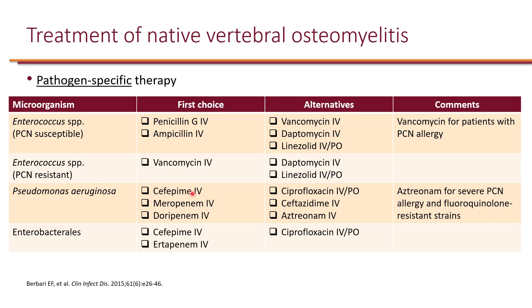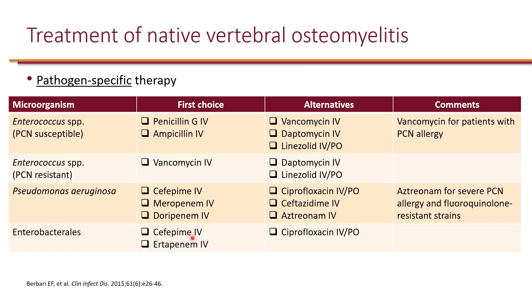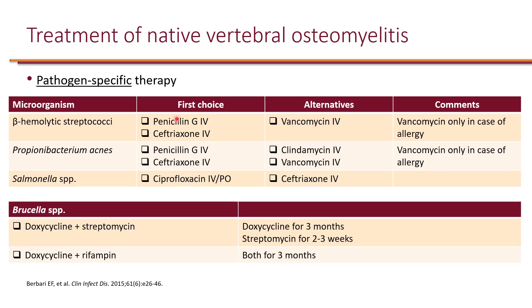For pseudomonas, cefepime is the drug of choice. For multidrug-resistant pseudomonas, carbapenems may be the option as it could be resistant to cefepime. Piperacillin-tazobactam is not listed here because it has less bone penetration compared to cefepime. For Enterobacterales, cefepime or ertapenem are drugs of choice given extensive study data, with ciprofloxacin as an alternative. For beta-hemolytic streptococci, penicillin and ceftriaxone are first choice, and vancomycin is an alternative.